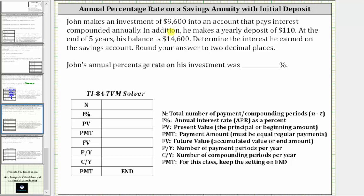John makes an investment of $9,600 into an account that pays interest compounded annually. In addition, he makes a yearly deposit of $110. At the end of five years, his balance is $14,600. Determine the interest he earned on the savings account, rounded to two decimal places.